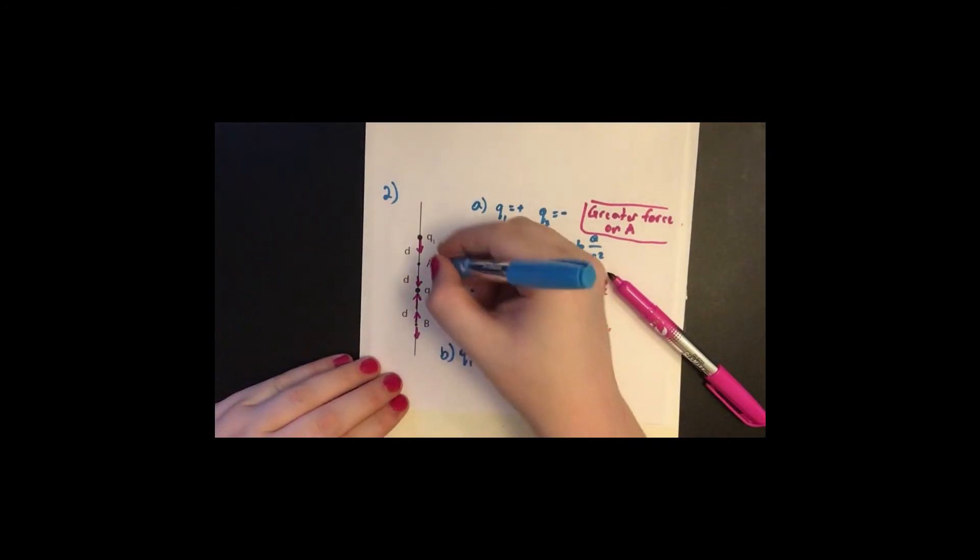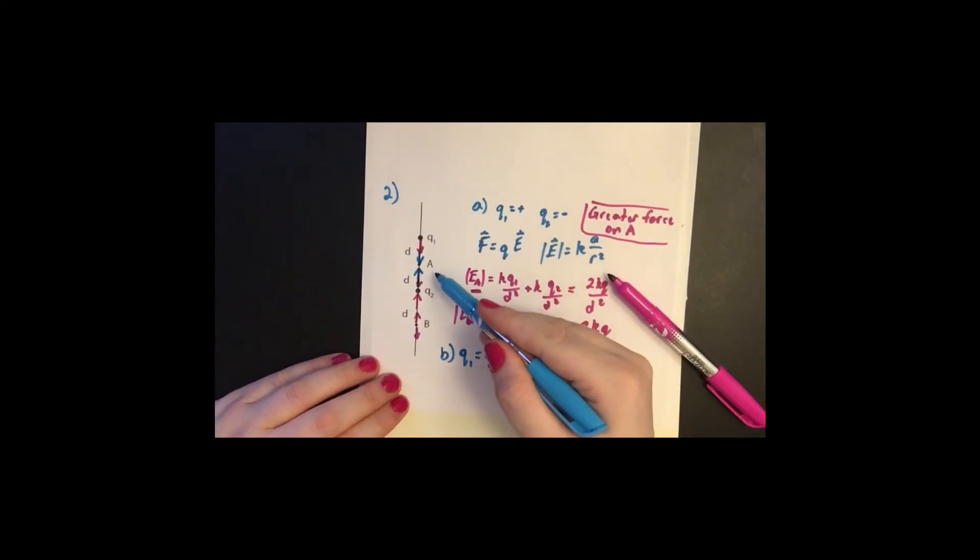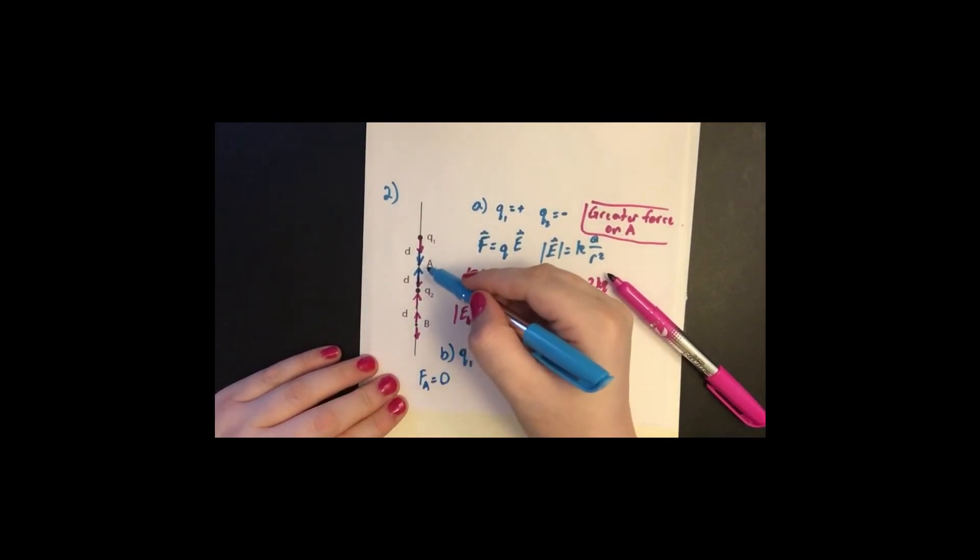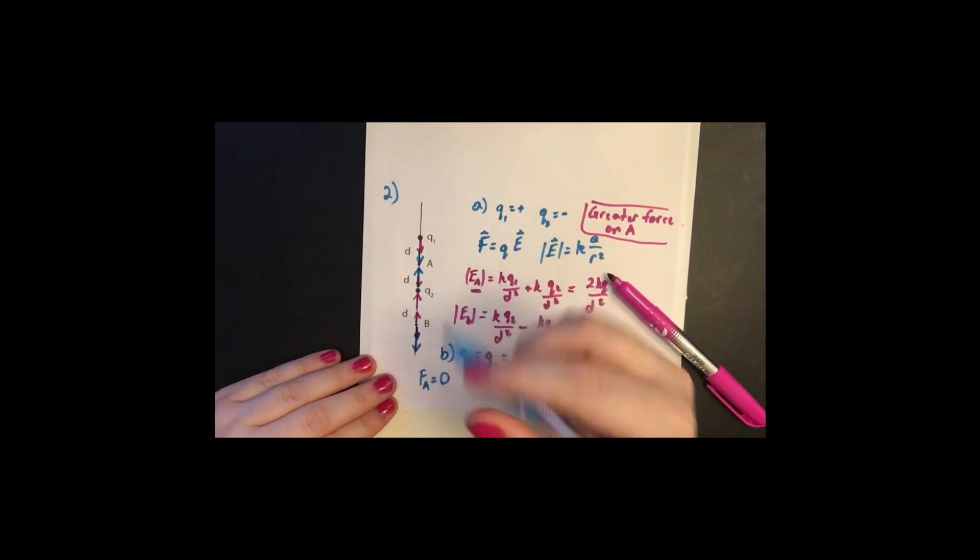at point A, both fields are going to be pointing inward, and they're both the same distance away. So our fields are going to cancel, so our force at A is just zero, because there's no field at A. So now we have more strength at B, because the force from Q1 and the field from Q1 is still going down, but also the field from Q2 is going down now. So those two add together, and the field is not zero at B.